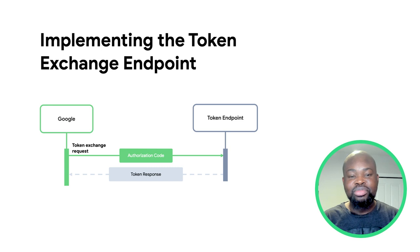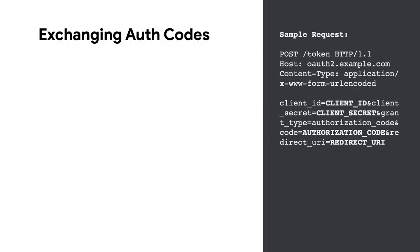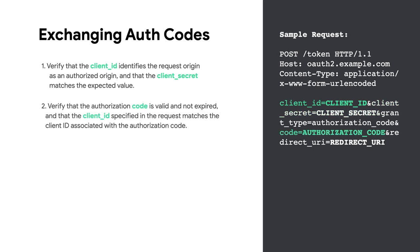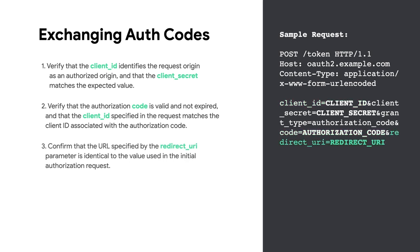After the user signs in and your authorization endpoint returns a short-lived authorization code to Google, Google sends a request to your token exchange endpoint to exchange the authorization code for an access token and a refresh token. To exchange authorization codes for an access token and a refresh token, your token exchange endpoint responds to requests by executing the following steps: verify that the client ID identifies the request origin as an authorized origin and that the client secret matches the expected value; verify that the authorization code is valid and not expired and that the client ID specified in the request matches the client ID associated with the authorization code; verify that the URL specified by the redirect URI parameter is identical to the value used in the initial authorization request.